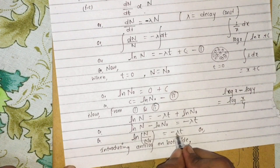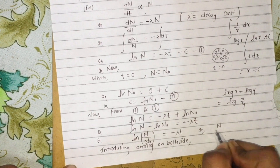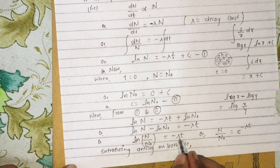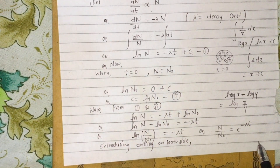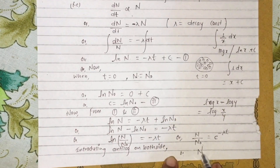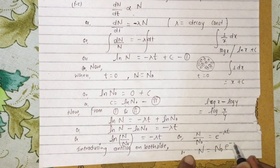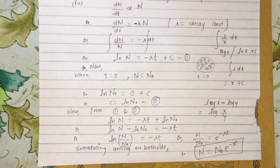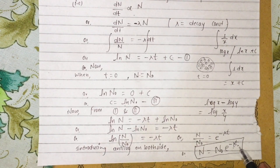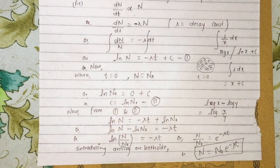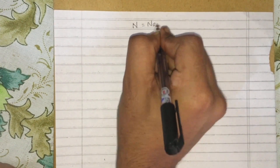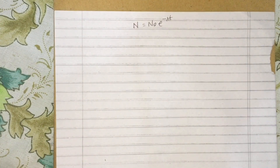Therefore, taking the antilog: N equals N-naught times e to the power minus lambda t. This is the required expression, N equals N-naught e to the power minus lambda t, which we have proved.